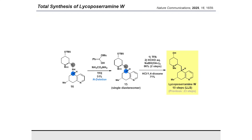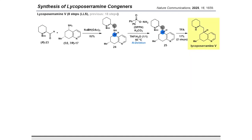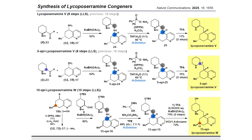We next examined whether the late-stage nitrogen deletion strategy could be applied to other tetrahydroquinoline-containing phlegmarine alkaloids such as lycoposilamine V. A chiral piperidine fragment was prepared from the corresponding carboxylic acid and reacted with the chiral tetrahydroquinoline fragment to obtain a nitrogen deletion precursor. The nitrogen deletion reaction of this substrate was successfully delivered using DBPH as a nitrogen transfer agent, and subsequent Boc deprotection accomplished the total synthesis of lycoposilamine V in eight steps.